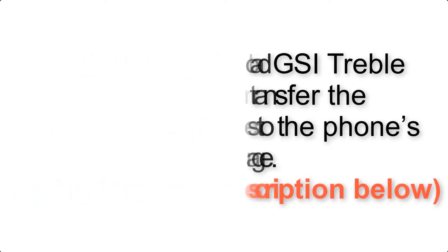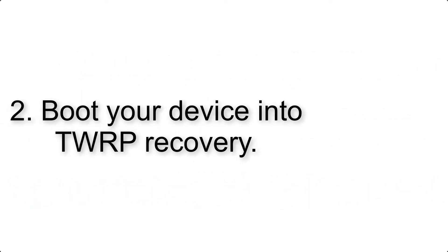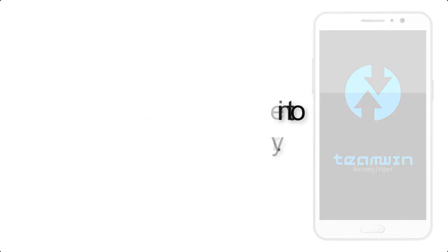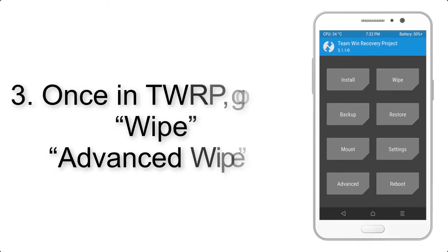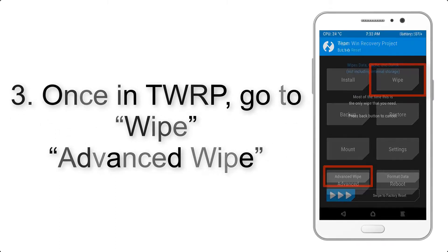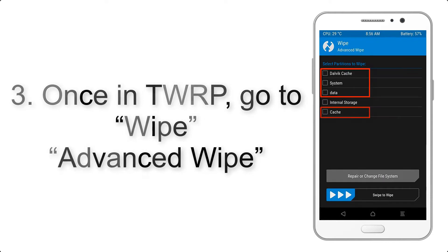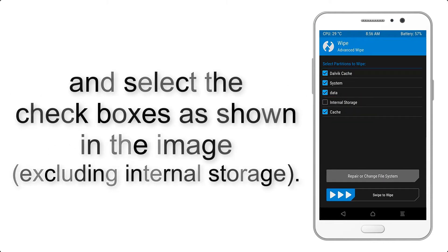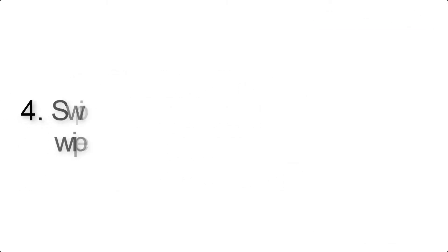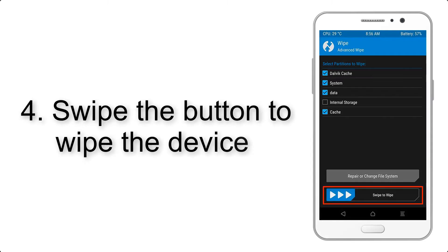Step 2: Boot your device into TWRP recovery. Once in TWRP, click on Wipe, then Advanced Wipe, and select the checkboxes as shown in the image, excluding internal storage.